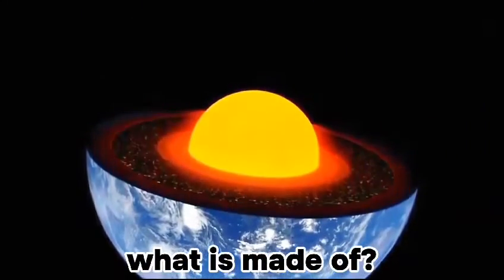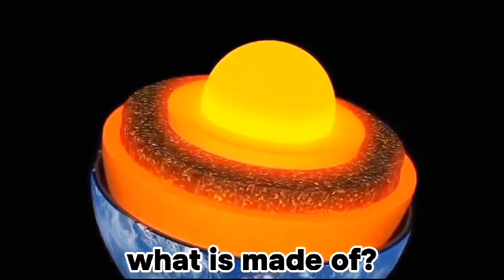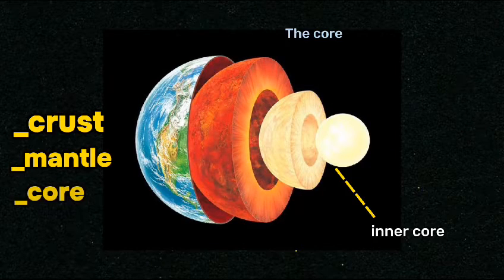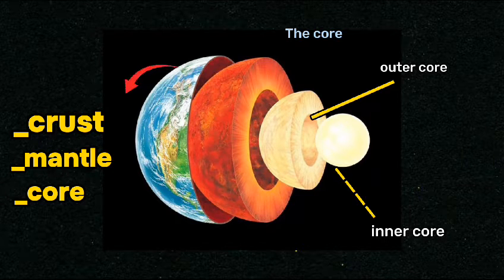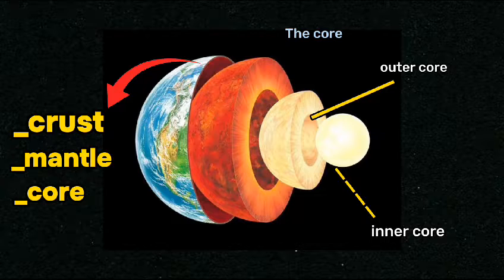Do you have any idea what the Earth itself is made of? Earth is actually made of four layers: crust, mantle, inner core, outer core. This is the outermost layer, crust. Yes, you have understood correctly. We live on this.